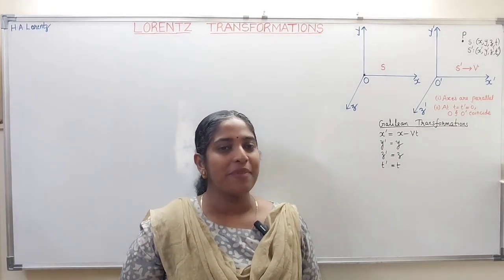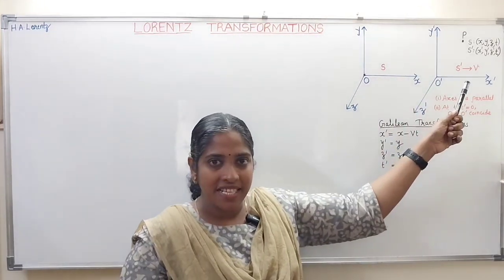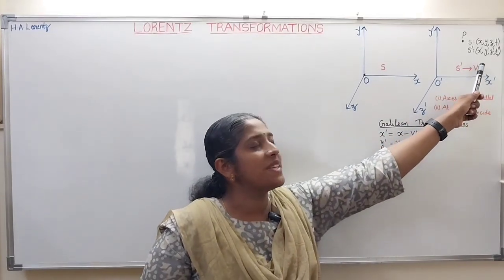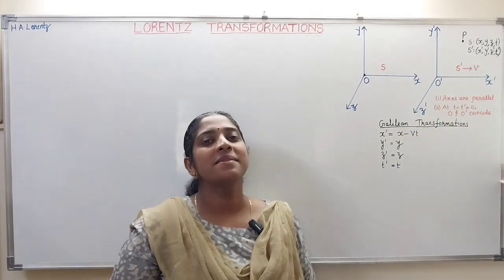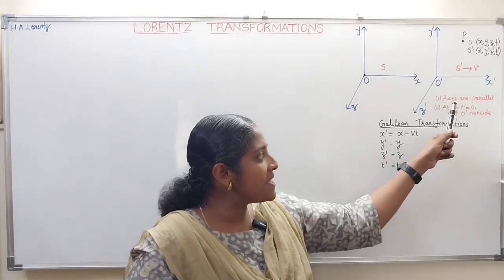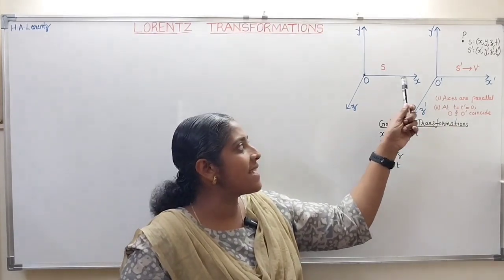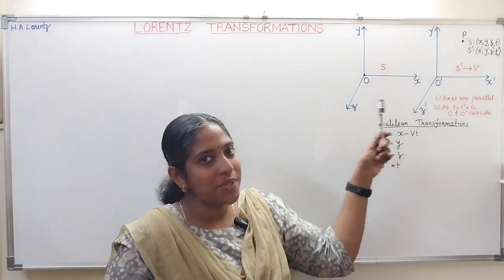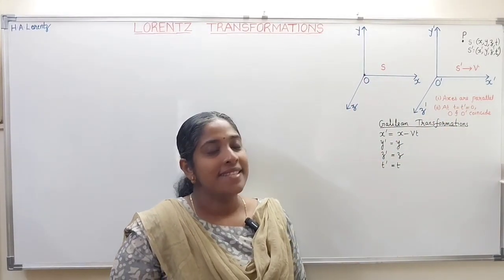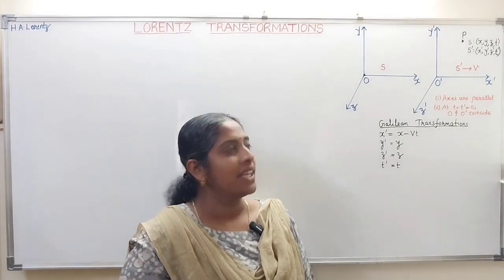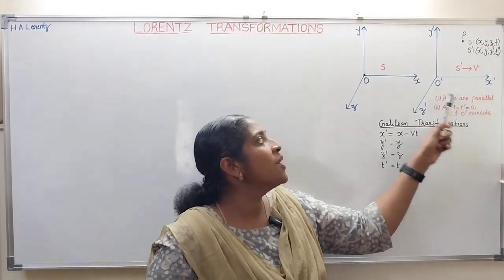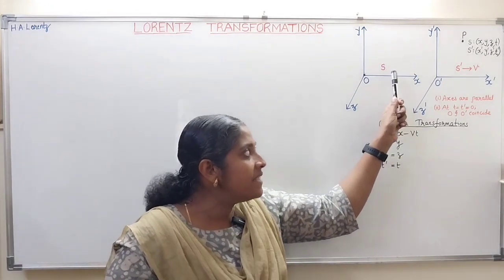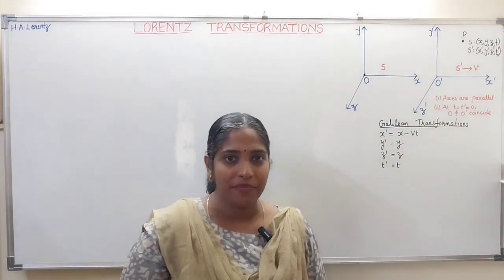Let's consider two inertial frames of reference S and S'. S is at rest and S' is moving along the positive x direction with speed v. For simplicity, we take two assumptions. First, the axes are parallel: x axis is parallel to x' axis, y is parallel to y', and z is parallel to z' axis. Second, initially, at time t equal to zero, the origin O in S frame coincides with the origin O' in S' frame.